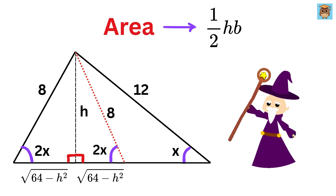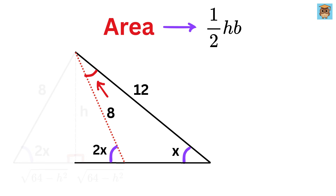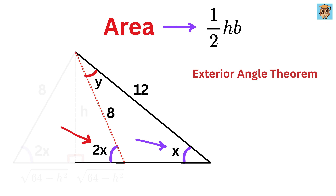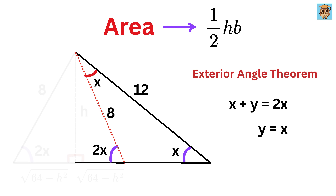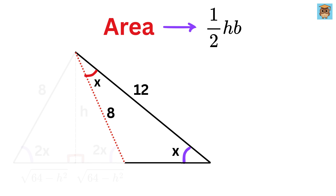Here comes the second magic. Let us label this angle as y. Since this is 2x and this is x, using the exterior angle theorem, we have x plus y equals 2x, or y equals x as well. Thus this triangle is also an isosceles triangle, and this side length is also equal to 8.